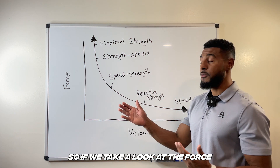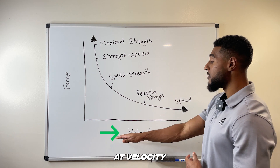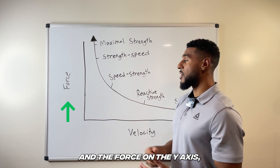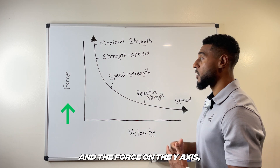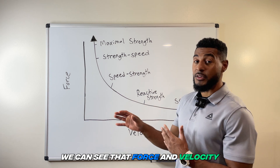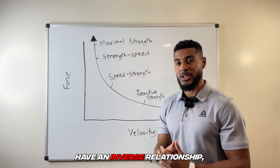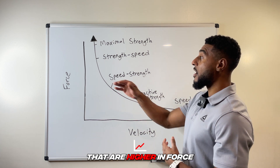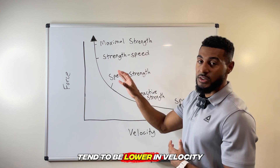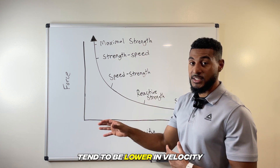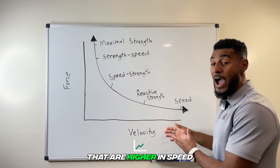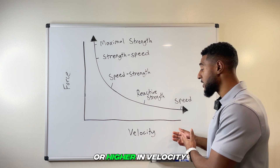If we take a look at the force-velocity curve right here, I have velocity on the x-axis and force on the y-axis. We can see that force and velocity have an inverse relationship, meaning activities that are higher in force tend to be lower in velocity, and those activities that are higher in speed or velocity are going to be lower in force.